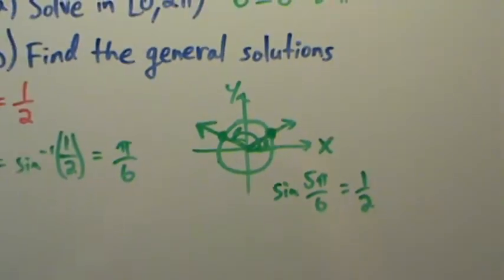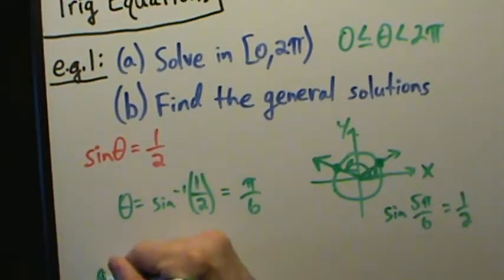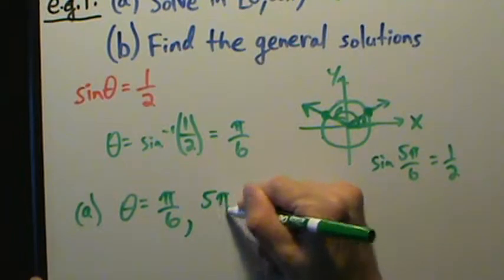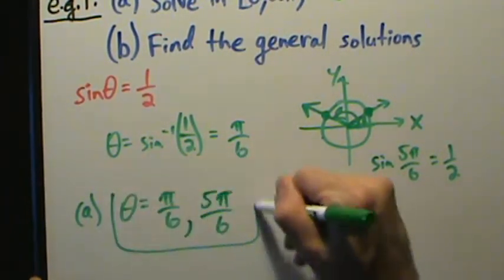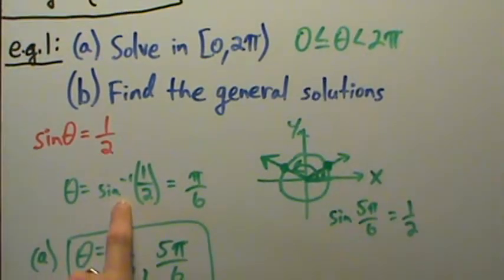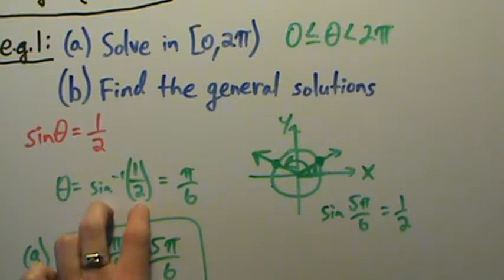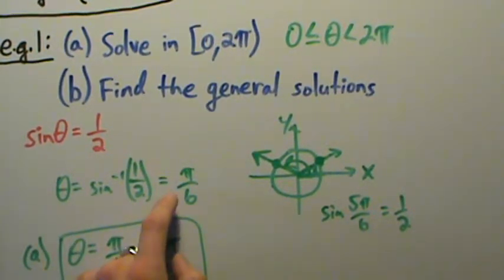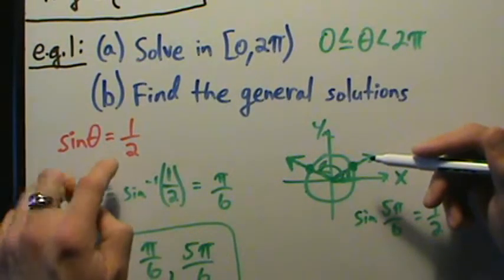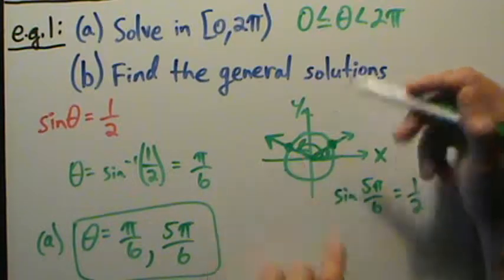So π/6 and 5π/6 are the only two answers for part A. Zooming back out: solve in the interval 0 to 2π — the answers for part A are theta equals π/6 and 5π/6. We want to be very careful with inverse trig because it only gives us one correct answer. When you take the inverse sine of something, the value you get is only going to be in quadrant 1 or quadrant 4, but if sine of theta equals 1/2, the values between 0 and 2π are in quadrants 1 and 2.